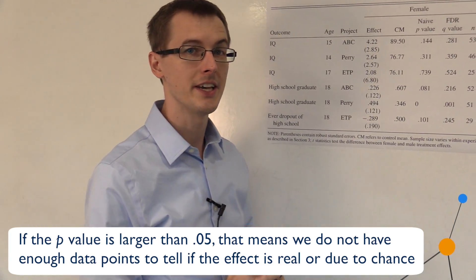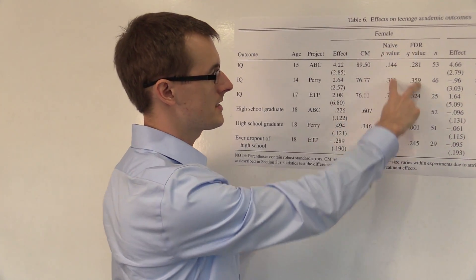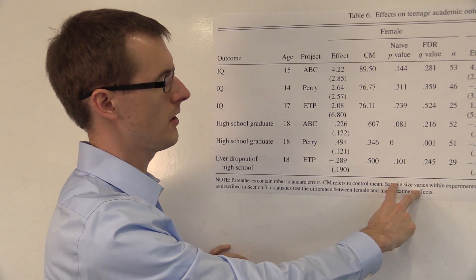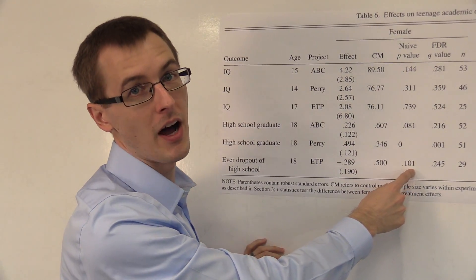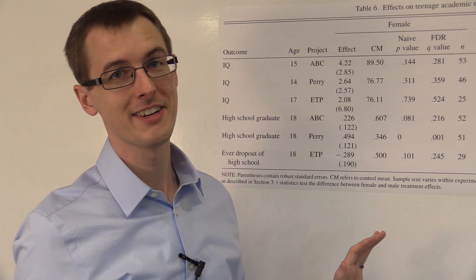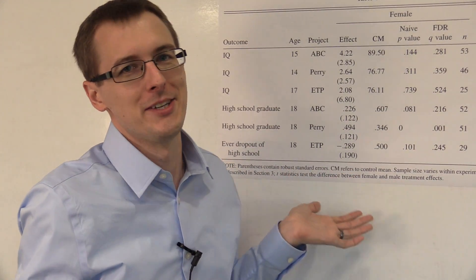Now let's look at p-values in this data. That's what is listed in these two columns here. This first column is called the naive p-value, so we're going to just ignore it because it's naive. Why would you want to do anything that's naive?